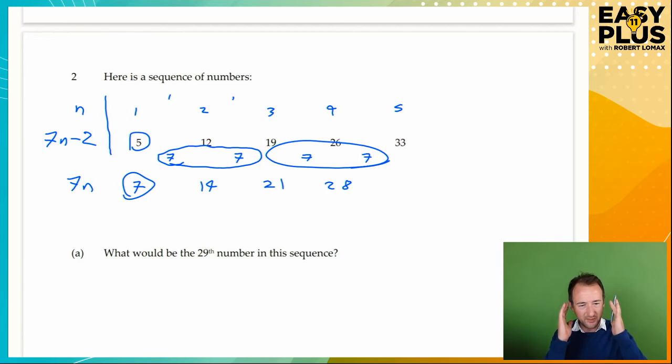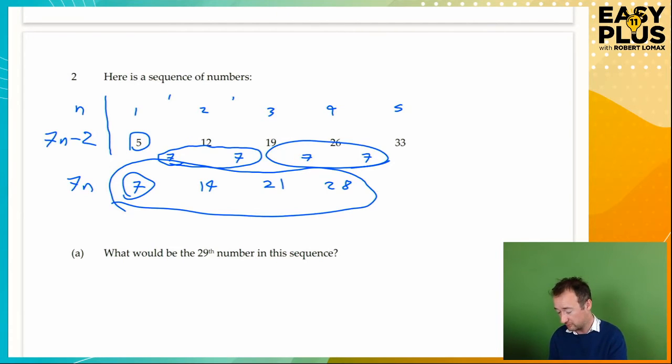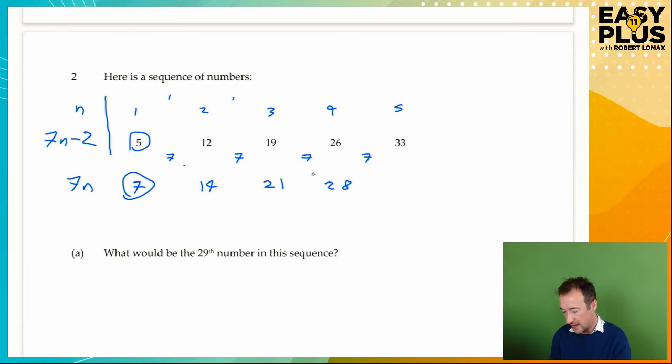So before we had 7n, this obviously is not 7n. What would 7n be? So 7 times 1 is 7, 7 times 2 is 14, 7 times 3 is 21, 7 times 4 is 28. Can you see the pattern? These here are always 2 less than these here. 12 is 2 less than 14, 19 is 2 less than 21. So these are 7n, but take away 2. So this row of numbers is in fact 7n minus 2. And it really is as simple as that.